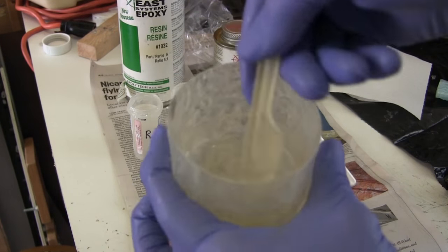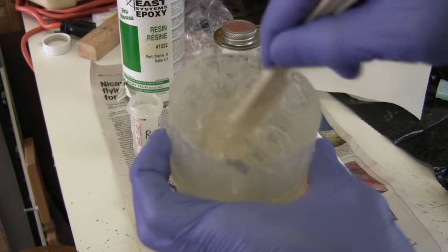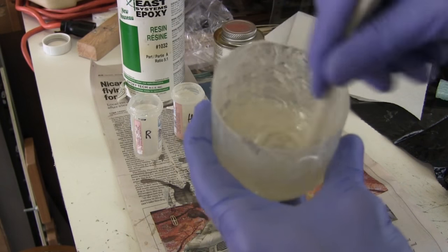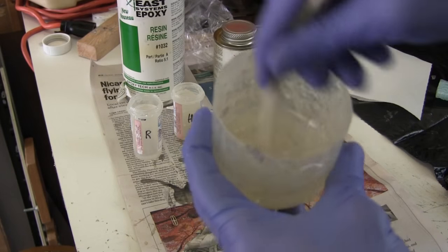Then I pour some hardener into its measuring container, up to the mark. I pour that in the mixing container and clean up with a new paper towel. Then comes the mixing. Mix it very well. Scrape the container. Stir in both directions. Spend a lot of time on this, otherwise your resin might not harden completely.